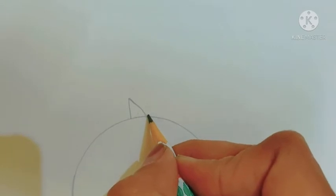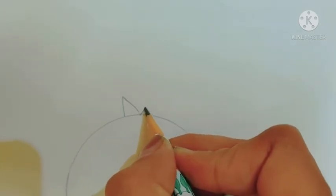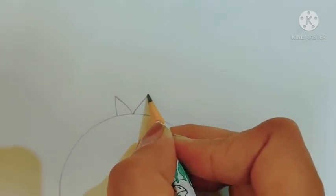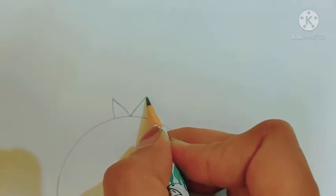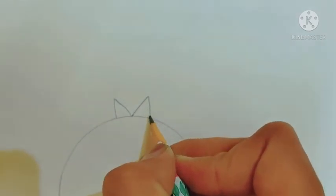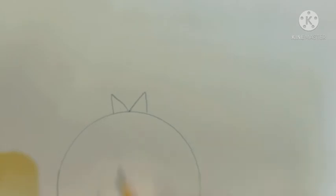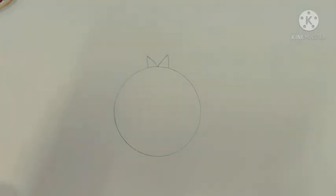One more slanting line like this and one small standing line again. Okay, so this is your pomegranate.